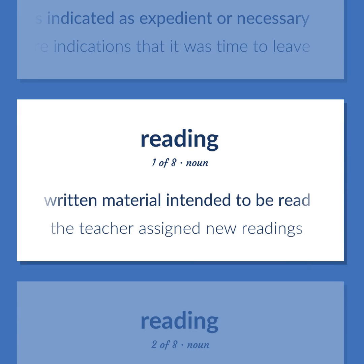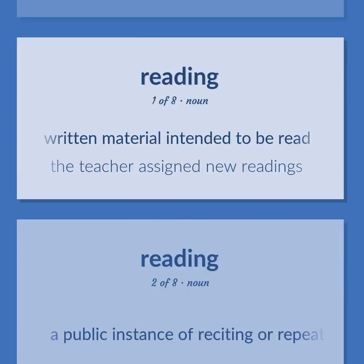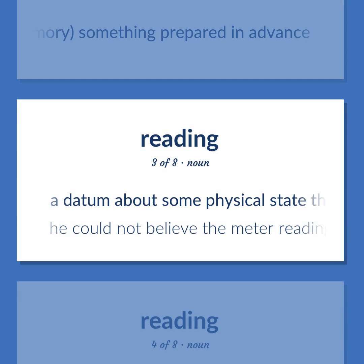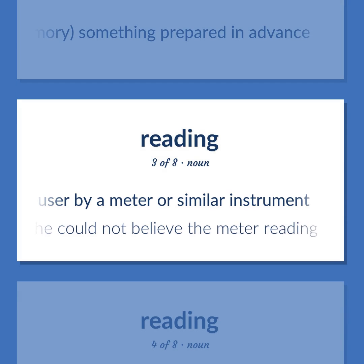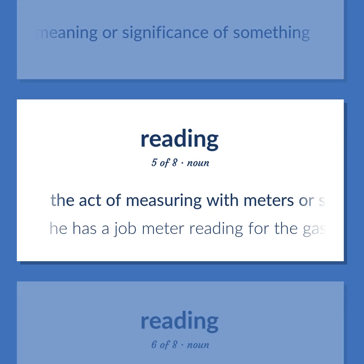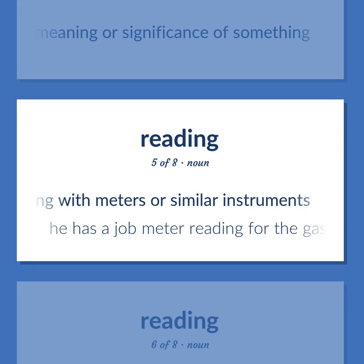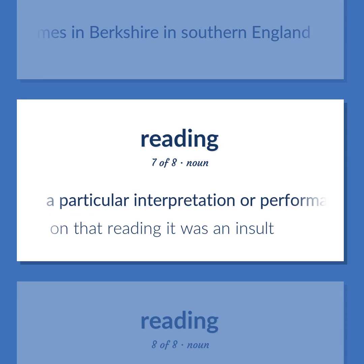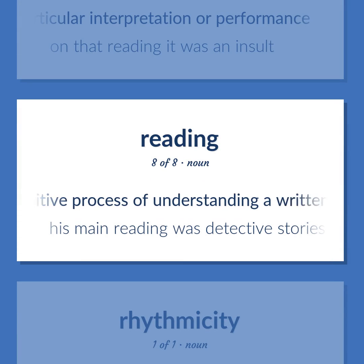READING: Written material intended to be read — the teacher assigned new readings. A public instance of reciting or repeating from memory something prepared in advance. A datum about some physical state presented to a user by a meter — he could not believe the meter reading. A mental representation of the meaning or significance of something. A city on the river Thames in Berkshire in southern England. A particular interpretation or performance — on that reading it was an insult. The cognitive process of understanding a written linguistic message — his main reading was detective stories.